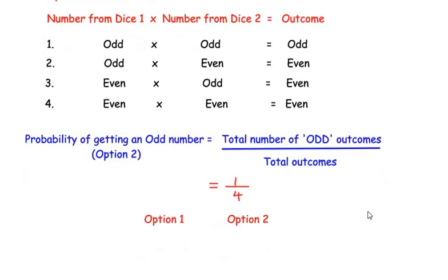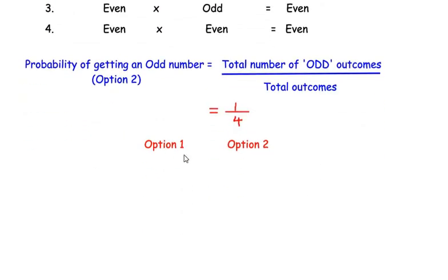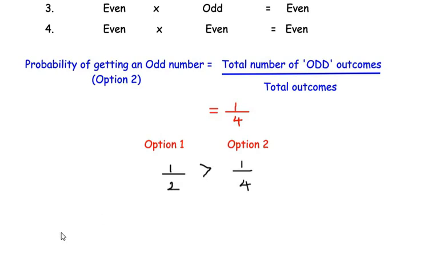Now comparing the two options: for option 1 the probability is 1 over 2, and for option 2 the probability is 1 over 4. Since 1 over 2 is greater than 1 over 4, Naima can win the game if she chooses option 1 because it has a higher probability. We conclude that Naima should choose option 1.